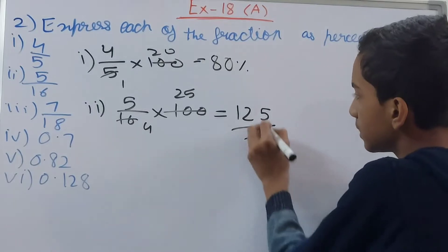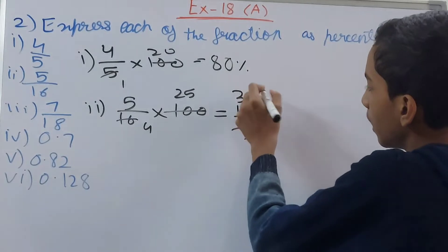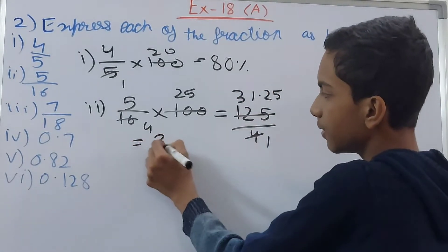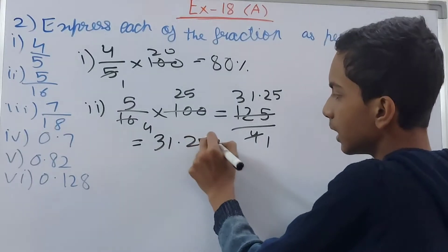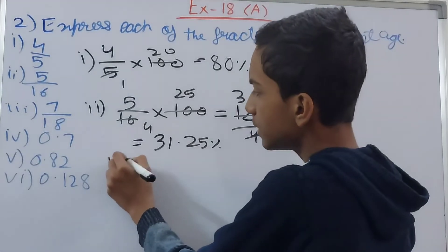Cancel this, cancel this. 5 comes down, 1 point, and then 25. So this becomes 31.25 percent. You can do the division on your own; I have done it mentally.